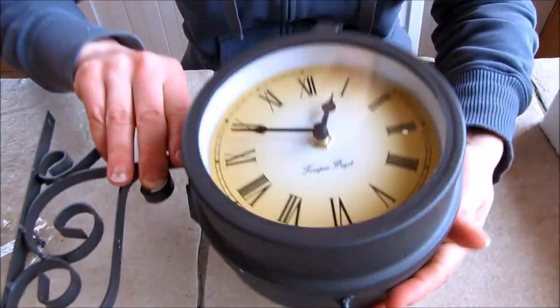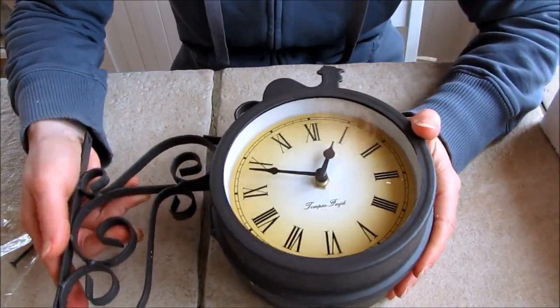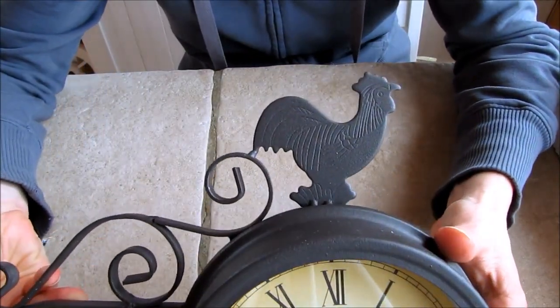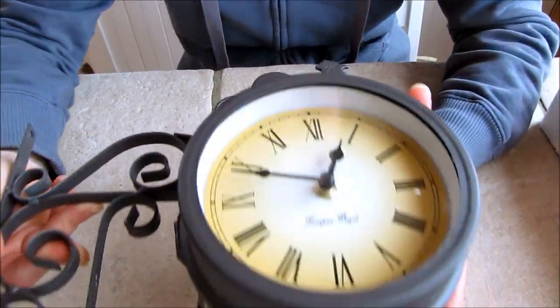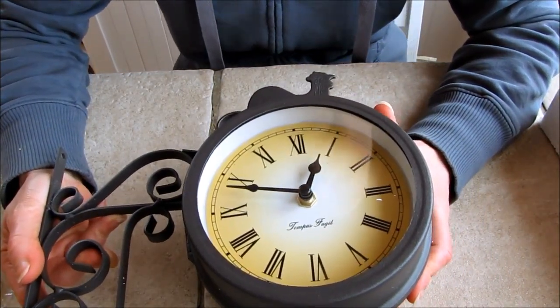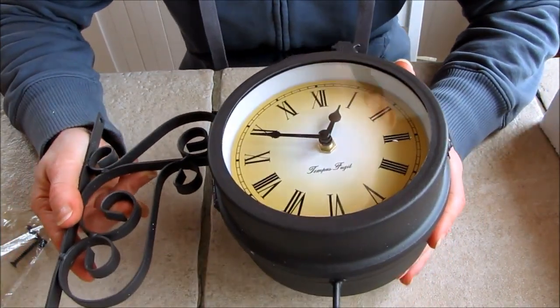So this is a gorgeous little clock and they have different styles that you can choose from. I just happen to really like this rooster clock. Of course. And it's at primrose.co.uk and I'm going to link that down in the description box below.